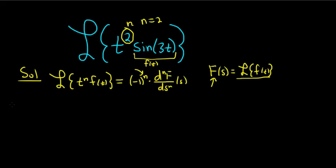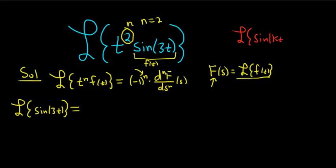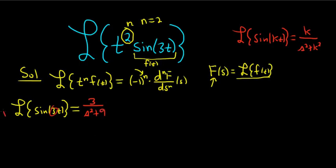Let's find the Laplace first of little f — it's the Laplace of the sine of 3t. The formula for the Laplace of the sine of kt is k over s squared plus k squared. If it's cosine kt, then cosine has the s. If it's sine kt, then it's just k. So here k is 3, so we get 3 over s squared plus 3 squared, which is s squared plus 9. So this is our big F of s.